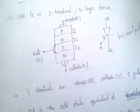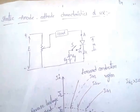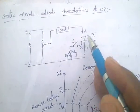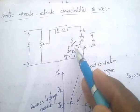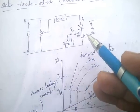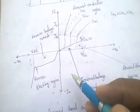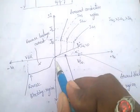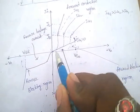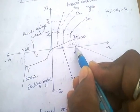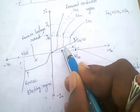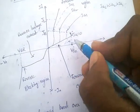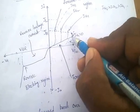Coming to the static anode-cathode characteristics of SCR: as the supply voltage increases up to a certain point, there is no significant increase in current — only a very small leakage current flows. At a specific point, the SCR starts conduction.